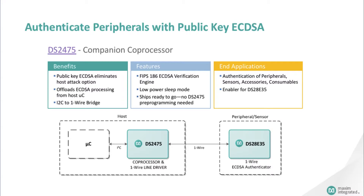This is a typical application of ECDSA authentication. The DS28E35 is our asymmetric ECDSA authenticator, which can be embedded into peripherals, sensors, consumables, etc. The DS2475 is the companion coprocessor for a microcontroller communicating with the DS28E35. With this public key ECDSA implementation, users can be worry-free regarding host site attacks. The DS2475 is the low-cost coprocessor companion for authentication of DS28E35 peripherals, offloading ECDSA host processing while using the integrated I2C to one-wire bridge.